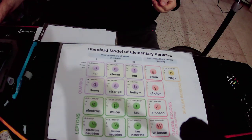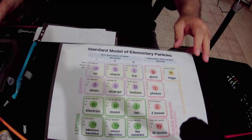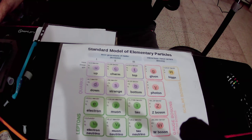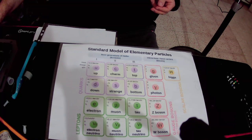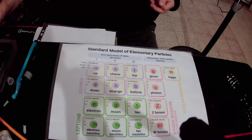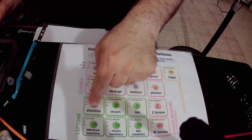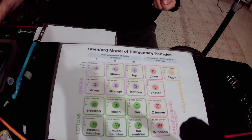The matter consists of 17 elementary particles, as you can see in the picture. And each of those 17 elementary particles has an anti-particle. For example, the anti-particle of the electron is the positron, which has a positive charge, while the electron has a negative charge.